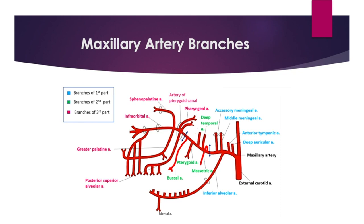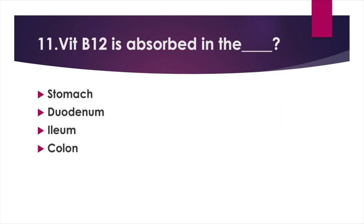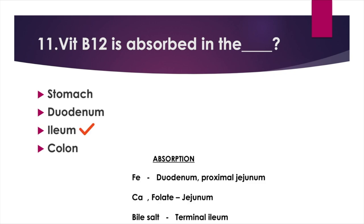Vitamin B12 is absorbed in the — Option A: Stomach, Option B: Duodenum, Option C: Ileum, Option D: Colon. Answer: Option C, Ileum. Absorption of iron: duodenum and proximal jejunum. Absorption of calcium and folate: in jejunum. Bile salts reabsorbed: in terminal ileum.